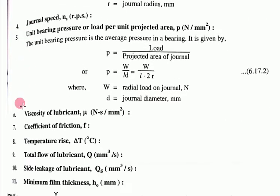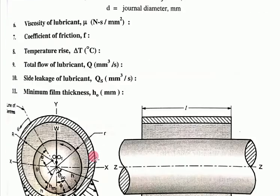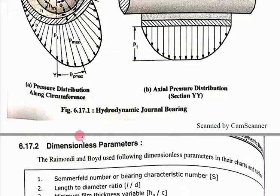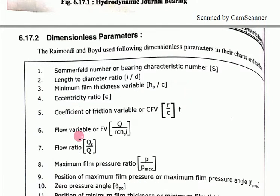There are up to eleven design and performance measurement variables. The last one is minimum oil film thickness (Ho), which is the minimum distance between the journal and the bearing. Now let us look at the dimensionless parameters.